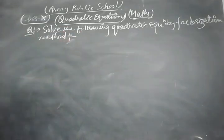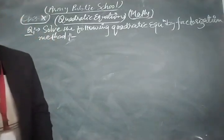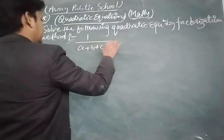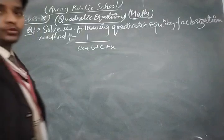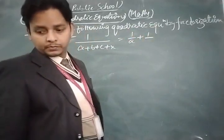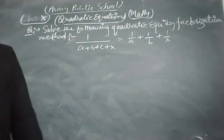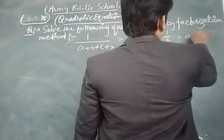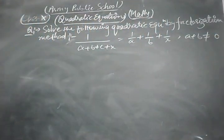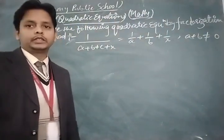The question is: solve the following quadratic equation by the factorization method. The equation is 1/(a + b + x) = 1/a + 1/b + 1/x, such that a + b is not equal to 0. This is a very important question related to your chapter on quadratic equations.